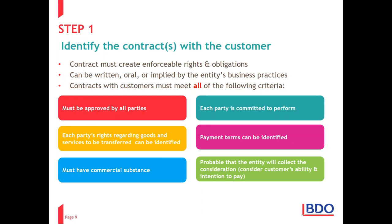When identifying contracts with the customer, we must understand that a contract is something that creates enforceable rights and obligations. That contract can be written, oral, or implied by the entity's business practices — it doesn't just refer to the written contract. For example, if our contract doesn't indicate settlement discounts but all our customers know that we normally provide one, that should be considered.